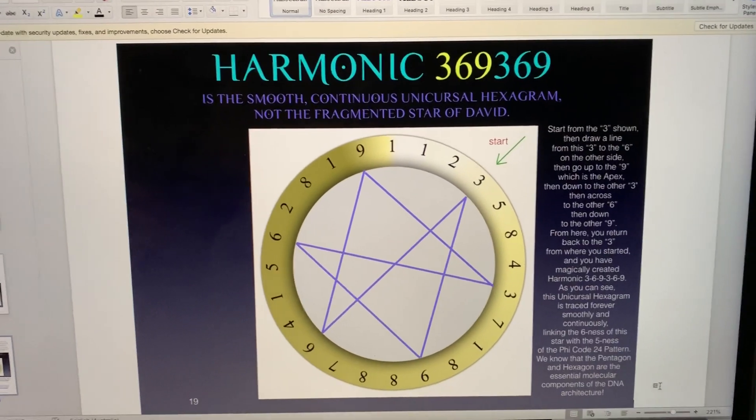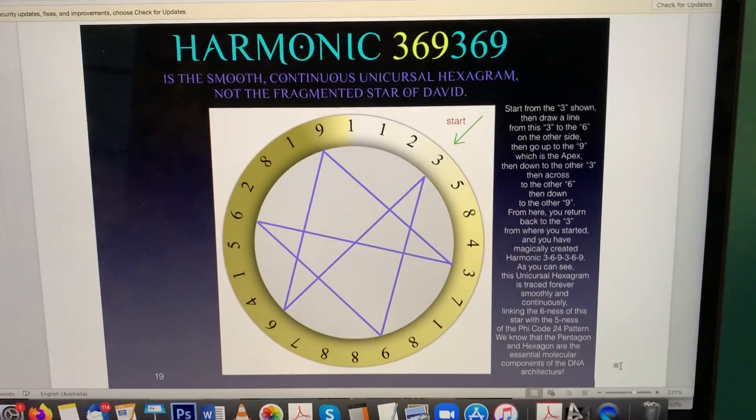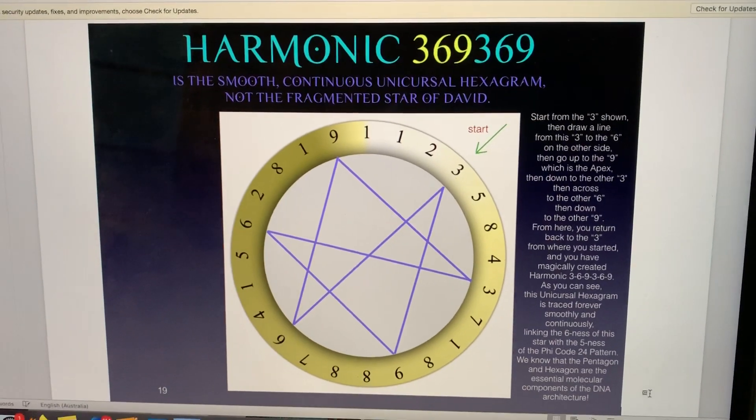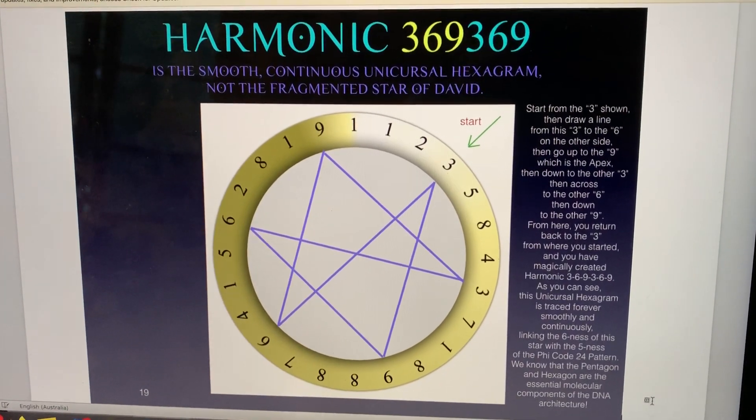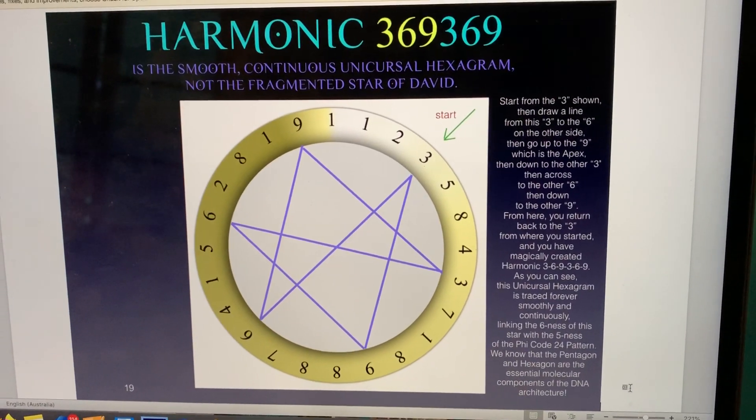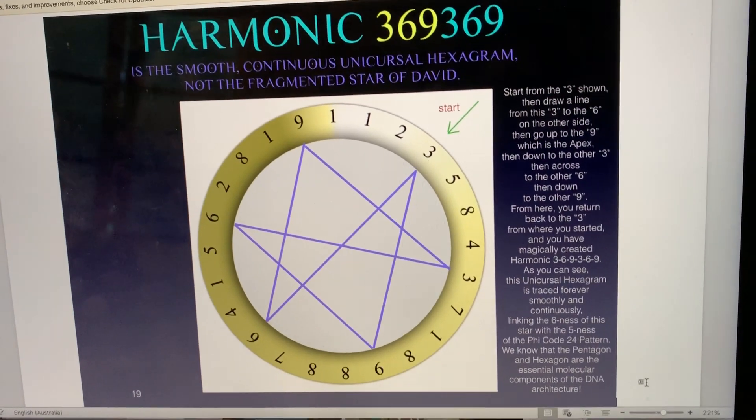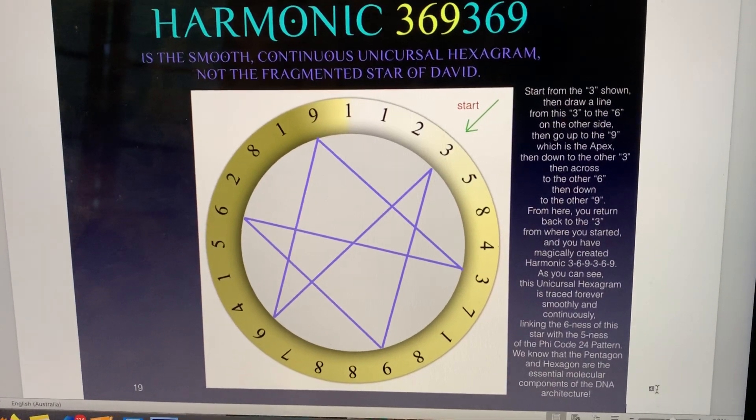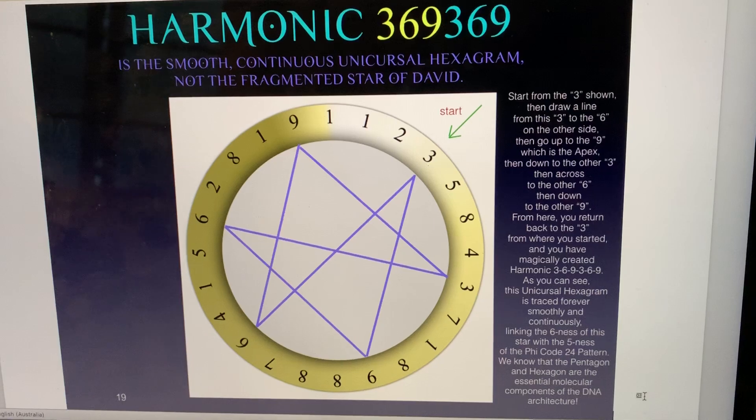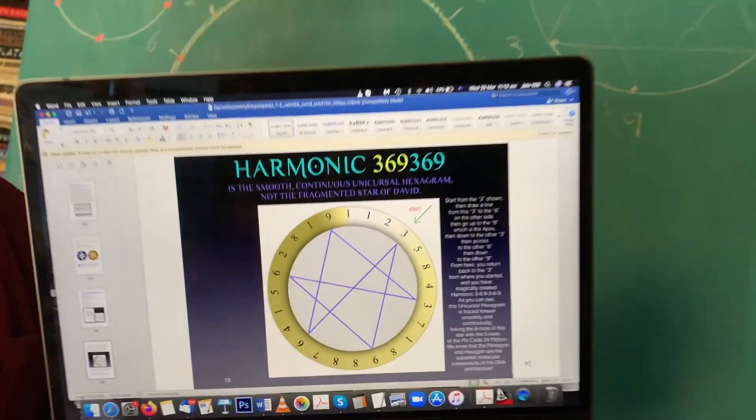Last year, you may recall, I made a very interesting observation that within the Phi Code of 24 infinitely repeating digits, there was exposed a unicursal hexagram, which you can see clearly there. And we're going to redraw this and explain why this was so important.